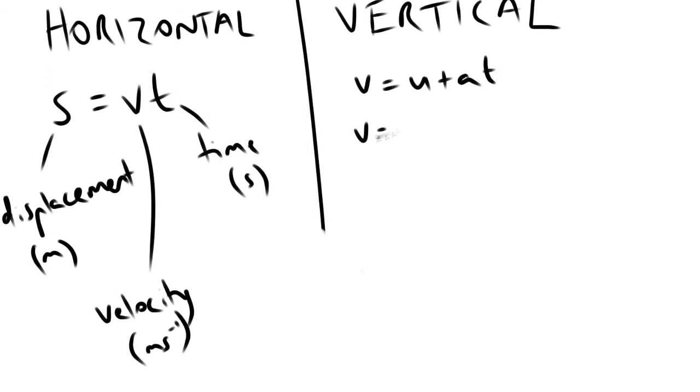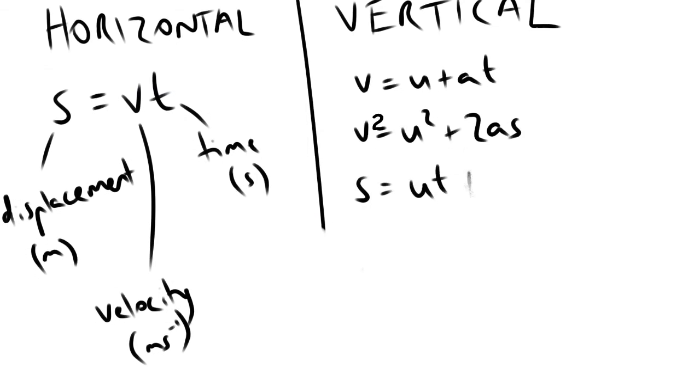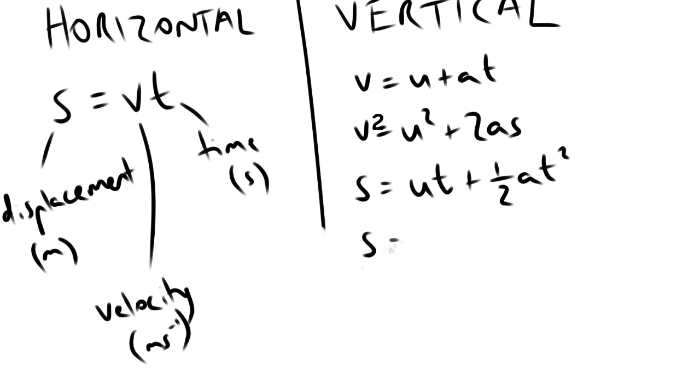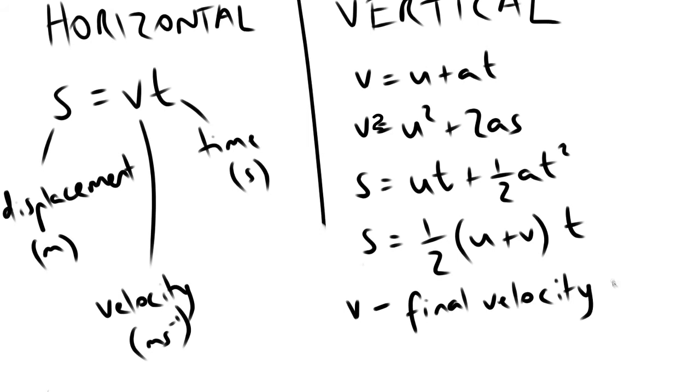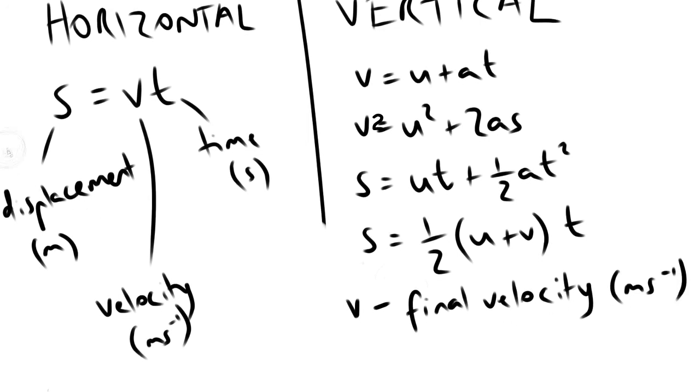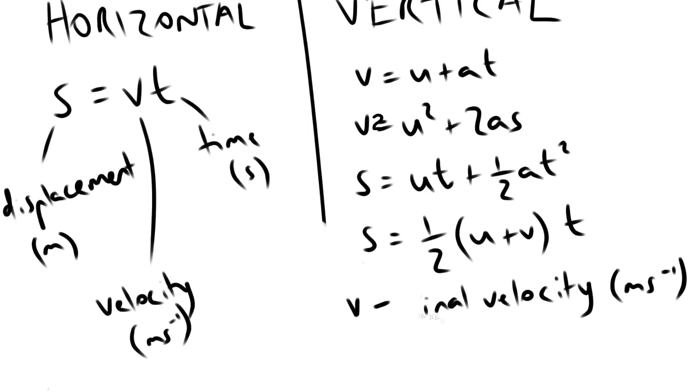Vertical deals with any vertical movement. There is acceleration due to gravity, so it uses the following equations: V equals U plus AT, V squared equals U squared plus 2AS, S equals UT plus half AT squared, and S equals half U plus V times T.